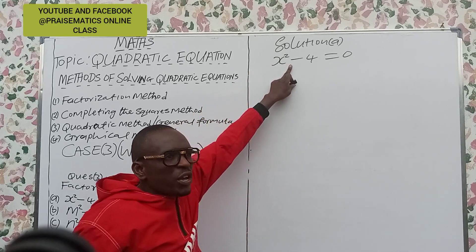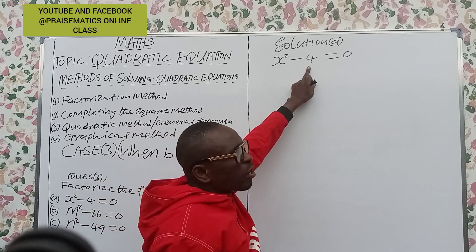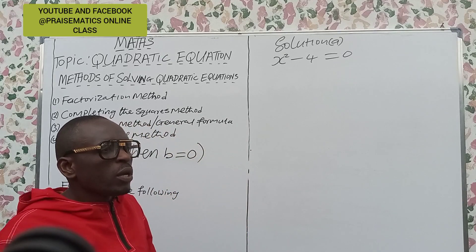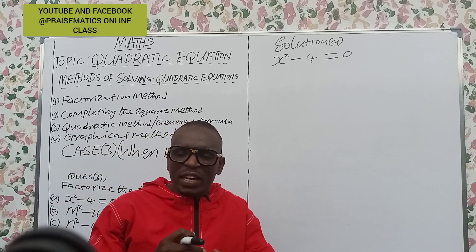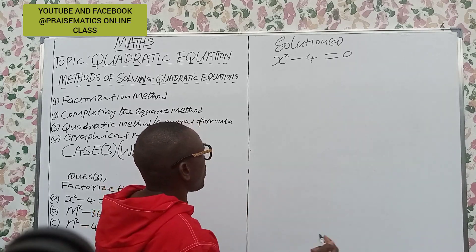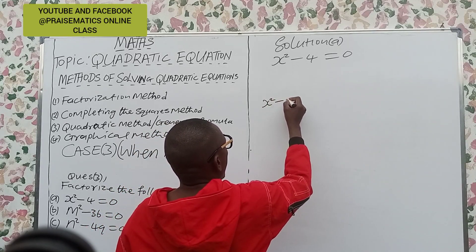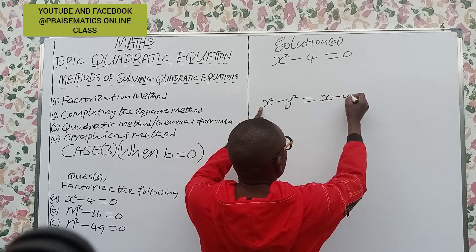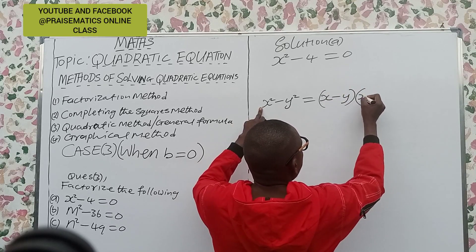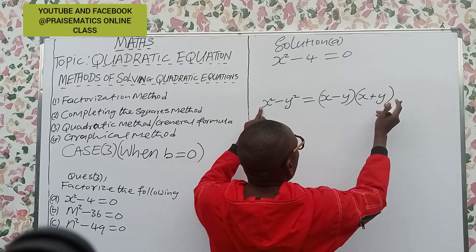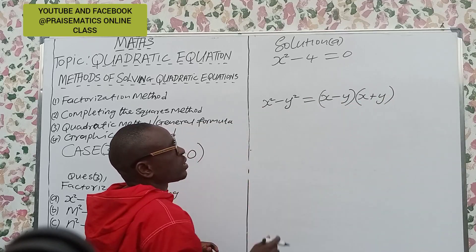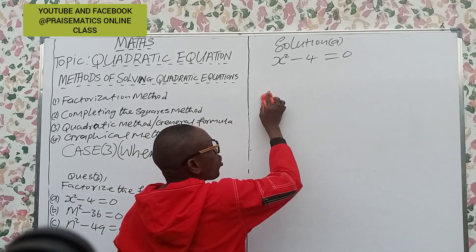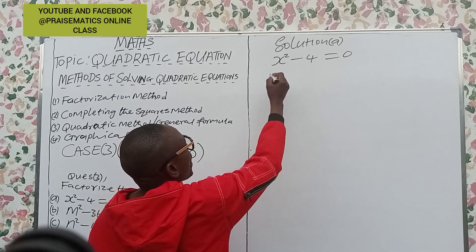The coefficient of b, the coefficient of x, is 0, and -4 is the constant. I'm going to solve it in two forms. First, remember those days in primary school when we were doing differences of two squares — for example, x² - y² resolves to (x - y)(x + y). That is what we are going to use to solve this equation using the difference of two squares.